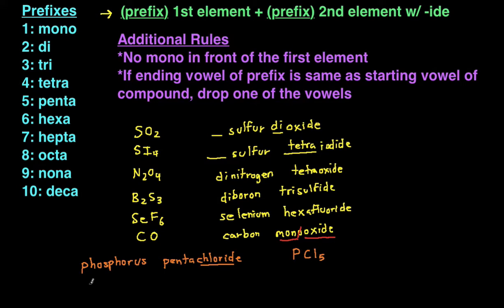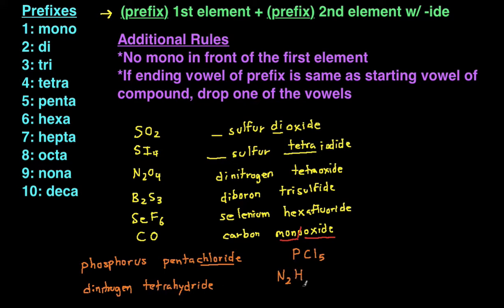One more reverse example: dinitrogen tetrahydride. The first element is nitrogen with the prefix 'di,' which means two, so there'll be N2. The second element is 'hydride,' which is hydrogen with '-ide' added, so it's hydrogen. Its prefix is 'tetra,' meaning four, so we have H4. The final answer is N2H4.